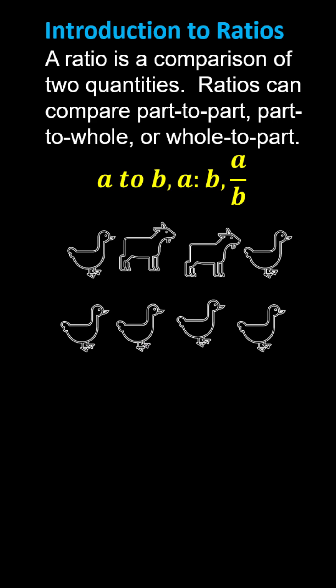A ratio is a comparison of two quantities. Ratios can compare part-to-part, part-to-whole, or whole-to-part. We can write the ratio of a to b three common ways: a (the word) to b, a colon b, or using the fraction bar a over b.